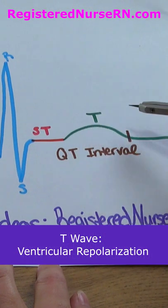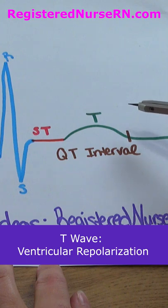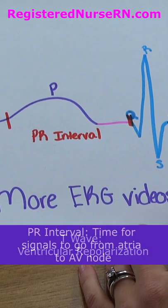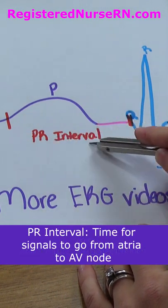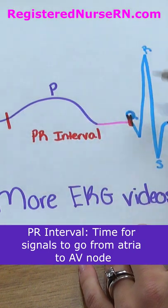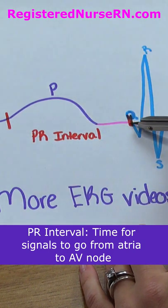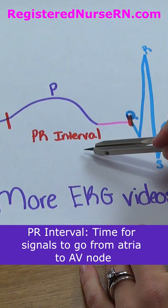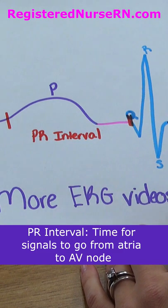Then we have the T wave, which represents ventricular repolarization. We also measure intervals within this. The PR interval starts at the beginning of the P wave and ends at the beginning of the QRS, representing the time it takes for signals to travel from the atria to the AV node.